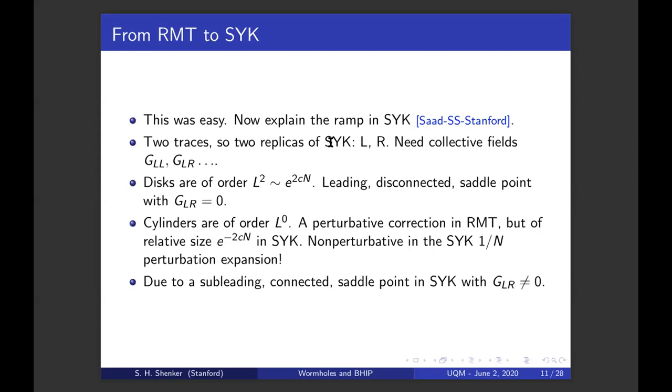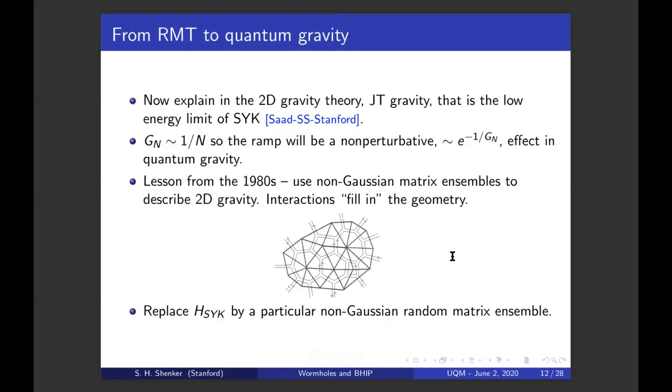It's non-perturbative in the SYK one over N expansion. Let me pause here to emphasize this. We have this pattern where a perturbative correction in random matrix theory, L to the zero versus L squared, has to be a non-perturbative correction in SYK. This is a crucial consequence of many body quantum chaos where you're dealing with these exponentially large matrices. In these large N systems, perturbation theory in one over N is not a one over ranks perturbation theory. It's something else. And in fact, the cylinder which connects left and right is due to a subleading connected saddle point in SYK where G left right is not equal to zero. It connects the two replicas.